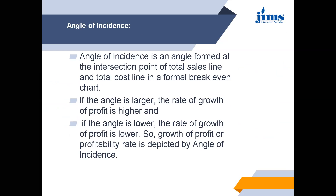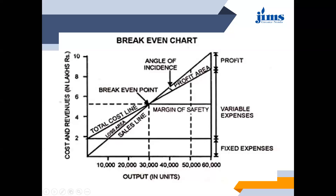Next is angle of incidence. The angle of incidence is the angle formed at the intersection point of the total sales line and total cost line in a break-even chart. If the angle is larger, the rate of growth of profit is higher. If the angle is lower, the rate of growth of profit is lower. So, the growth of profit or profitability rate is depicted by the angle of incidence — higher the angle of incidence, more is the growth.